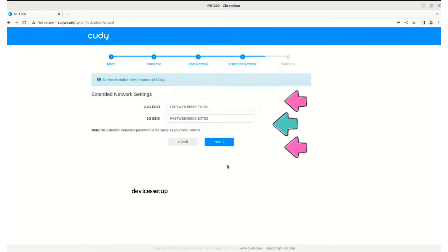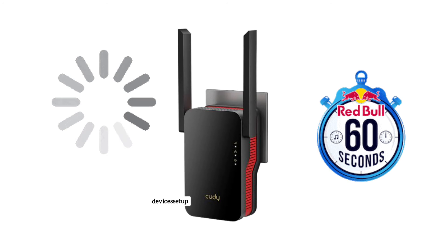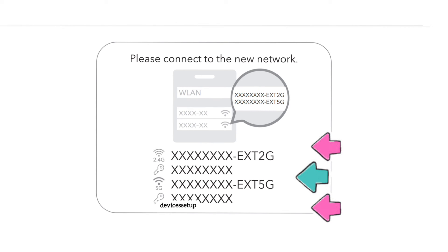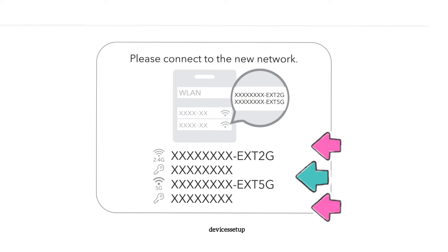Once done, hit 'save settings.' It will take around 60 seconds for the extender to save the settings. Your extender network name will then appear in your Wi-Fi list as your router's network name with the ext2g and ext5g suffix at the end.